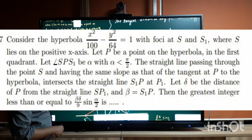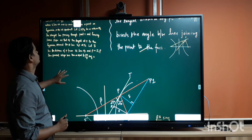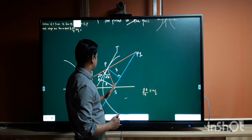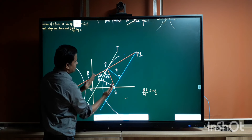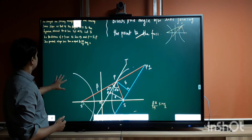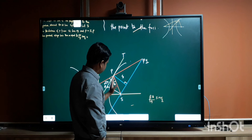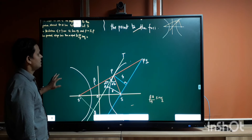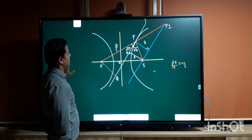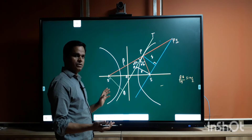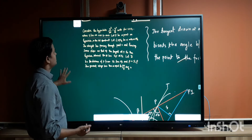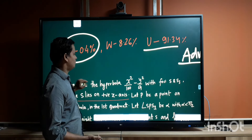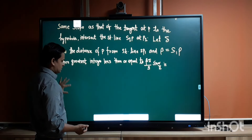The straight line passing through S and having the same slope as the tangent at P intersects the line S1P extended at P1. So S1P produced meets this parallel line at P1. Delta is the distance of P from the straight line, and beta is the length S1P. The question asks us to find the greatest integer less than or equal to β·δ/(9·sin(α/2)). This question was solved by only 0.4% of students in JEE Advanced and was unsolved by 91.34%.